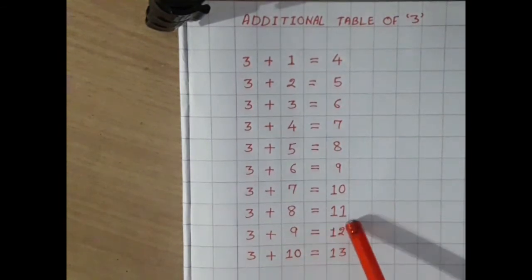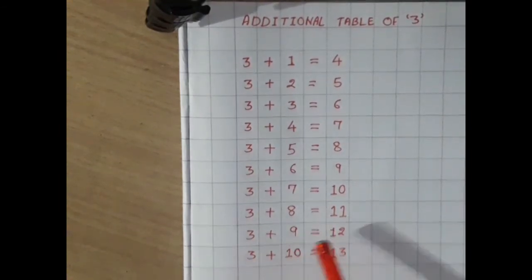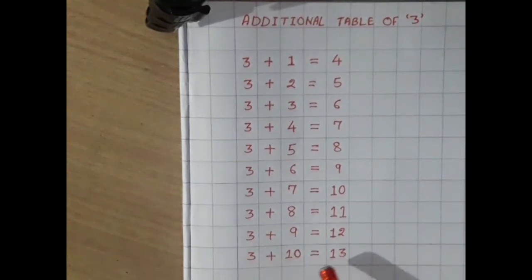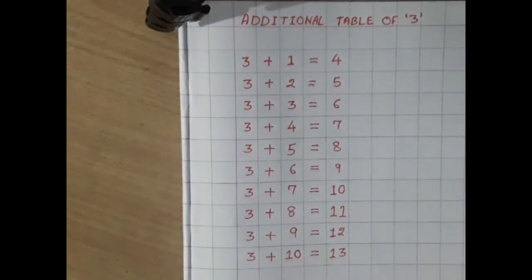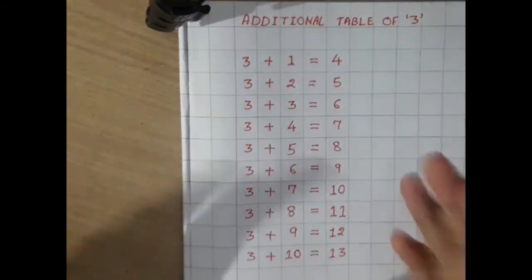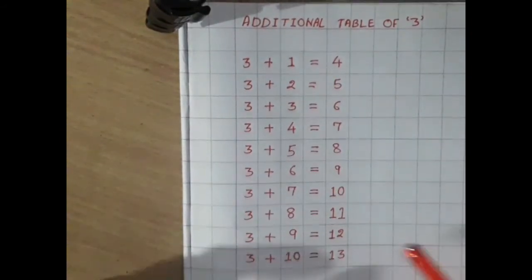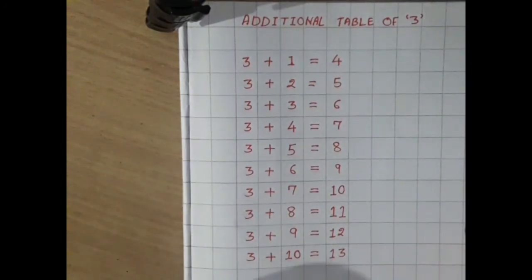3 plus 8 equals 11, 3 plus 9 equals 12, and 3 plus 10 equals 13. So students, in this way you can learn this table. Thank you so much students.